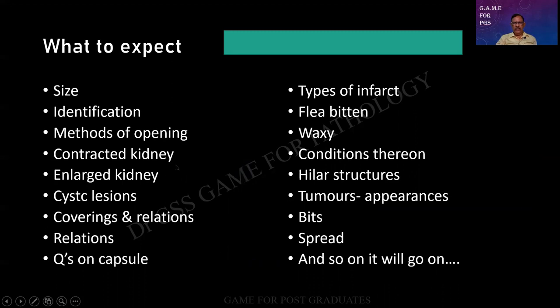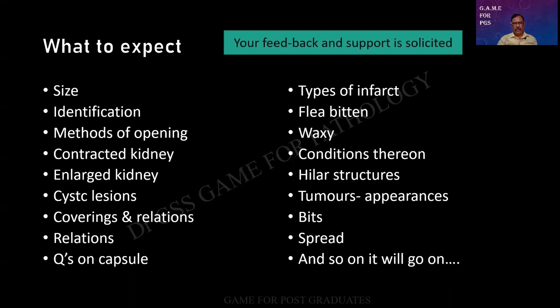And size, identification, contraction, enlargement, cystic lesions. Questions on the capsule, types of infarct. Where do you get a waxy kidney? What are all the hilar structures? And what are the conditions where you get the flea bitten kidney? Appearances of the tumors. From where will you give the bits? How does it spread? And so on it will go on. So I hope you people are a little familiar with the lesions.